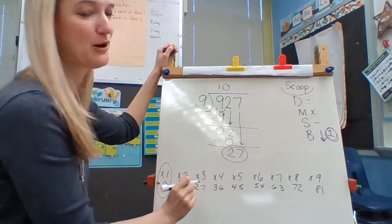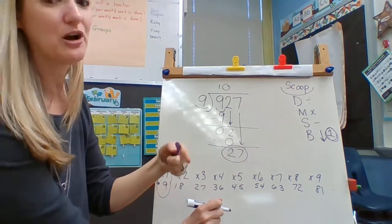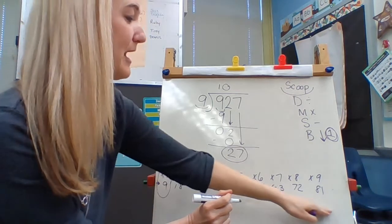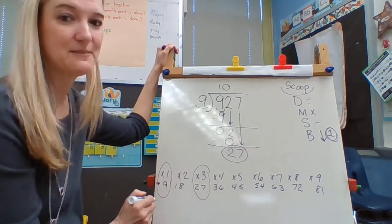This becomes my new number I'm dividing. How many times can 9 go into 27 without going over? I look down here, my bottom line, my skip counting line. Oh, there it is. 3 times.